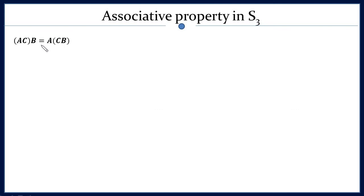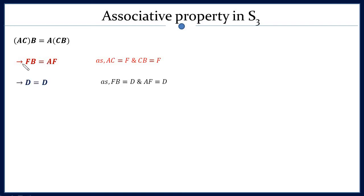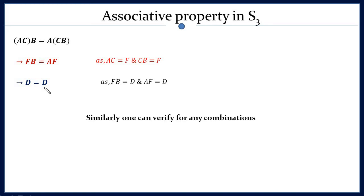The fourth property is associativity: for any three elements, (a∘c)∘b should equal a∘(c∘b). We have already shown a∘c = f. You can verify that c∘b also gives f. Then substitute: f∘b = d and a∘f = d, both sides equal d. Therefore associativity is verified, and since all four group properties are satisfied, the set of 6 permutation functions is a group under composition of permutation.